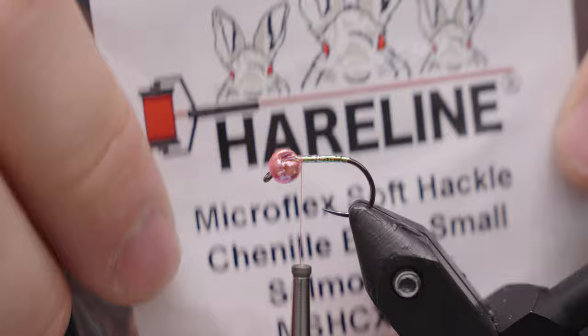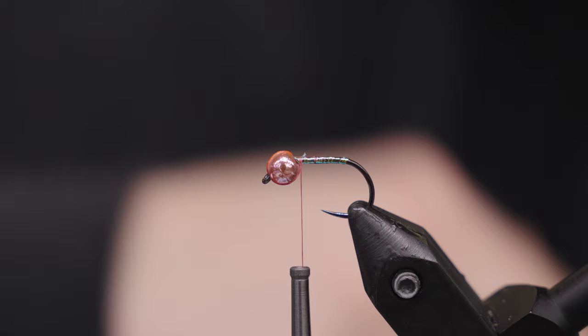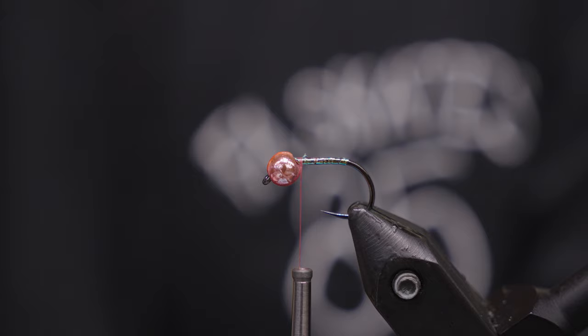Microflex Soft Hackle Chenille Extra Small Salmon Pink. This stuff is pretty crazy. It's all rubber. It looks really cool. It's not really going to change shape or color when it gets in the water because it's all synthetic. I have been smashing fish on it. Like I said, it's almost unfair. I feel kind of guilty using this. But there's eggs in the system and the fish are eating them, so it's working great.